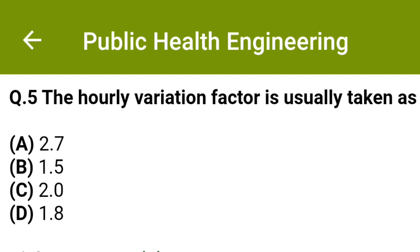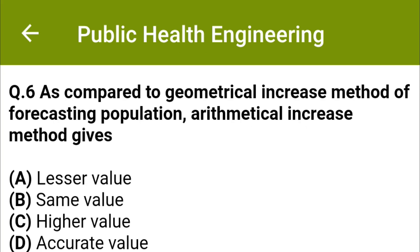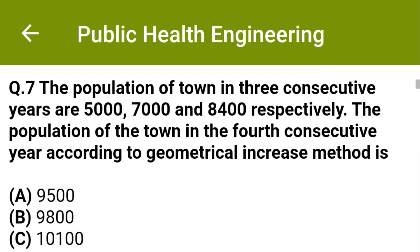As compared to the geometrical increase method of forecasting population, the arithmetical increase method gives: option A: lesser value, option B: same value, option C: higher value, option D: accurate value. The correct answer is option A: lesser value.